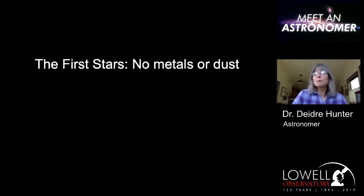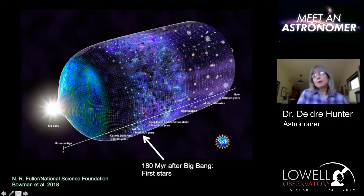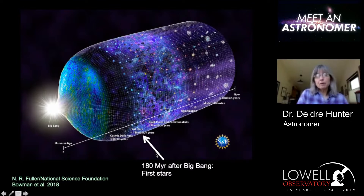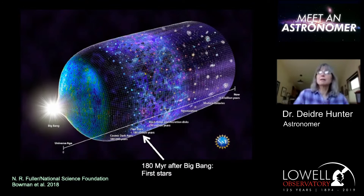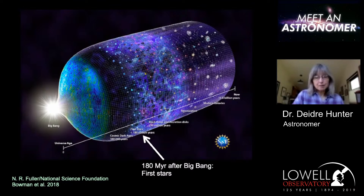This is a picture of the timeline of the universe — the Big Bang over here on the left, and now on the right. A group of astronomers a couple of years ago looked for the signature coming from the first star. It's an absorption signature seen against the cosmic microwave background. They found this signature at a frequency corresponding to a redshift corresponding to an age of 180 million years after the Big Bang. So we have some observational evidence that the first stars formed at that time in the universe's timeline.